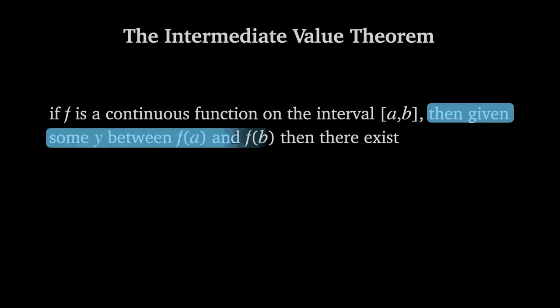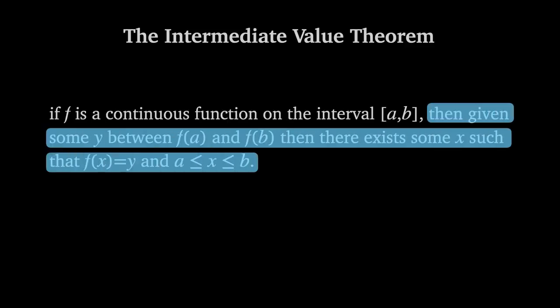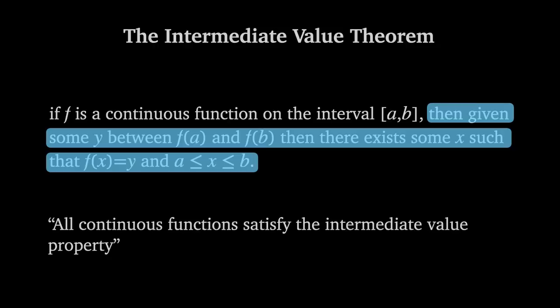And so, the Intermediate Value Theorem states that if f is a continuous function on the interval A to B, then given some Y between f(A) and f(B), there exists some X such that f(X) is equal to Y and X is between A and B. This is often referred to as the Intermediate Value Property, and so a shorter version would be all continuous functions satisfy the Intermediate Value Property.